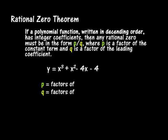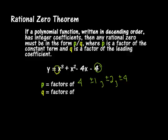p is the factor of the constant term, and our constant term is 4. So p equals factors of 4. Our factors of 4 are plus or minus 1, plus or minus 2, and plus or minus 4 — because 1 times 4 is 4, negative 1 times negative 4 is 4, 2 times 2 is 4, and so on. For q, that's the factor of the leading coefficient, which is 1. So q equals plus or minus 1.